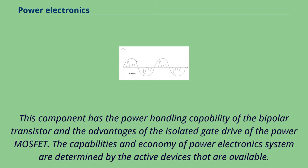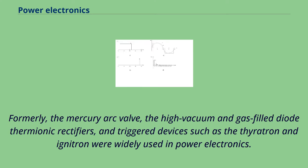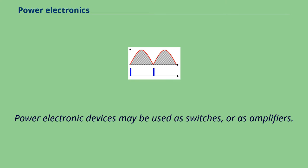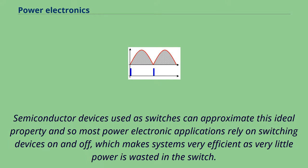The capabilities and economy of power electronic systems are determined by the active devices that are available. Their characteristics and limitations are a key element in the design of power electronic systems. Formerly, the mercury arc valve, high-vacuum and gas-filled diode thermionic rectifiers, and trigger devices such as the thyratron and ignitron were widely used. As the ratings of solid-state devices improved in both voltage and current handling capacity, vacuum devices have been nearly entirely replaced. An ideal switch is either open or closed and so dissipates no power—it withstands an applied voltage and passes no current, or passes any amount of current with no voltage drop. Semiconductor devices used as switches can approximate this ideal property, making systems very efficient.